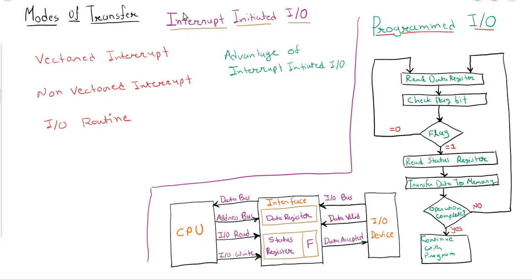Hello students. In the previous video we discussed what UART is and how communication takes place using UART. In this video we will discuss modes of transfer — how the CPU will transfer data from an IO device to memory or to the CPU. There are three modes: Programmed IO, Interrupt Initiated IO, and DMA (Direct Memory Access).